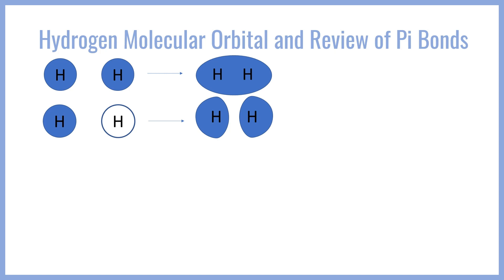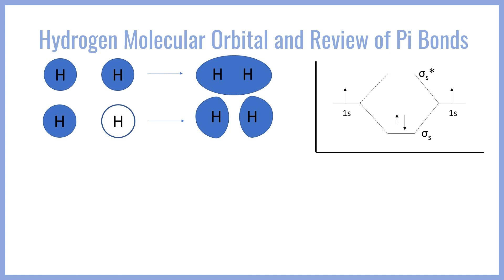We can represent this in a molecular orbital diagram chart with energy on the y-axis, where the 1s orbitals are combining into a sigma bonding pair and a sigma antibonding pair. The electrons from the 1s orbitals fill the bonding orbital first because it is lower in energy, and we always fill the lowest energy orbital first.